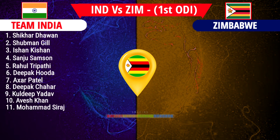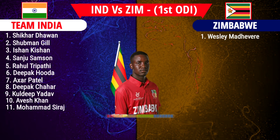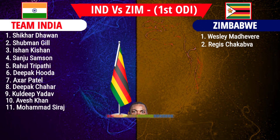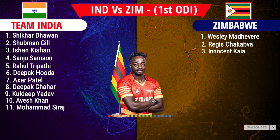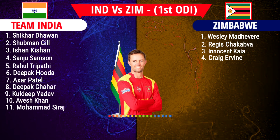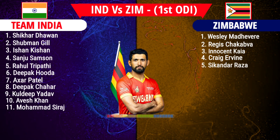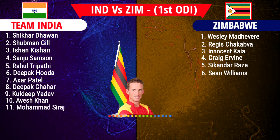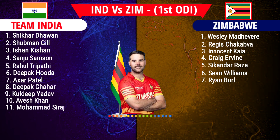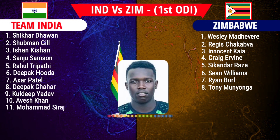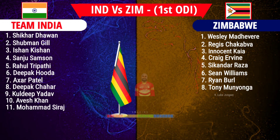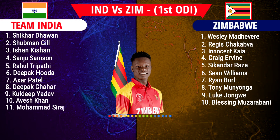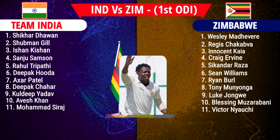Zimbabwe team playing 11: number one Wesley Madhevere, number two Regis Chakabva, number three Innocent Kaia, number four Craig Ervine, number five Sikandar Raza, number six Sean Williams, number seven Ryan Burl, number eight Tony Munyonga, number nine Luke Jongwe, number ten Blessing Muzarabani, number eleven Victor Nyauchi.